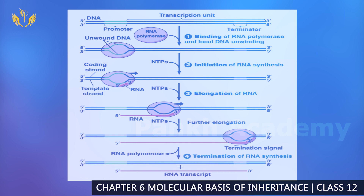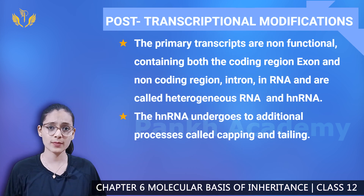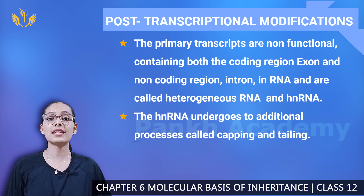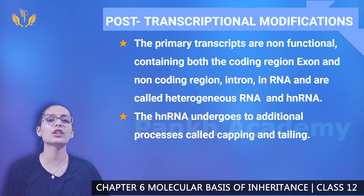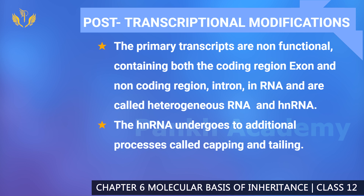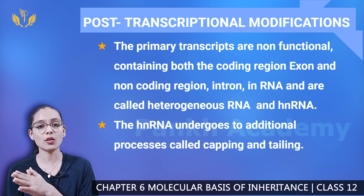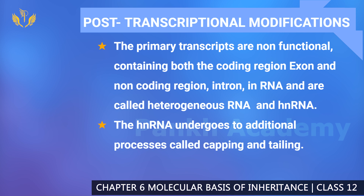Now, one important thing: post-transcriptional modifications, which occur only in eukaryotes. The primary transcript is non-functional and contains both the coding region (exon) and non-coding region (intron). In RNA, this is called heterogeneous RNA or hnRNA.